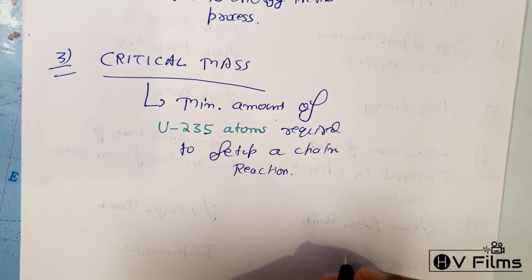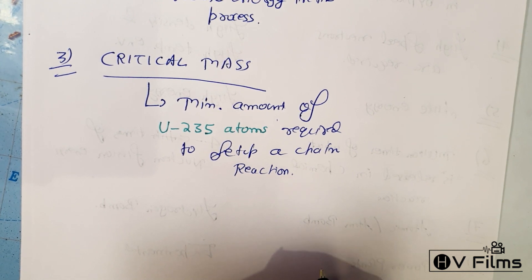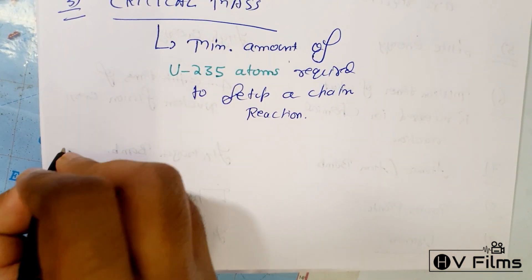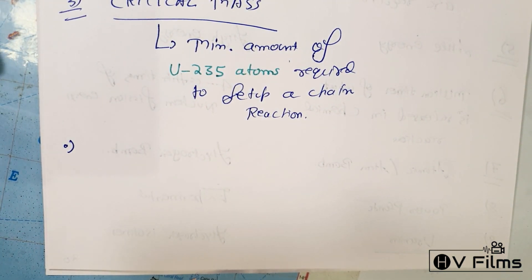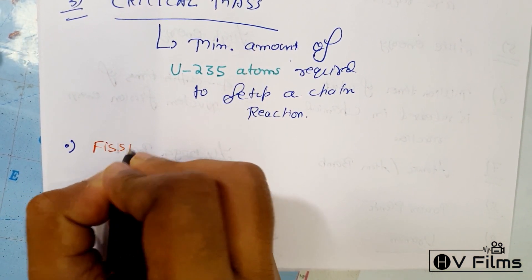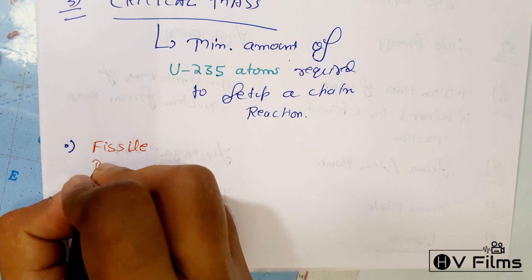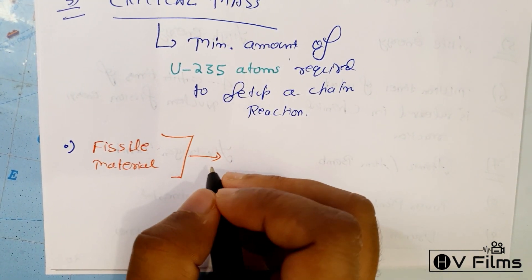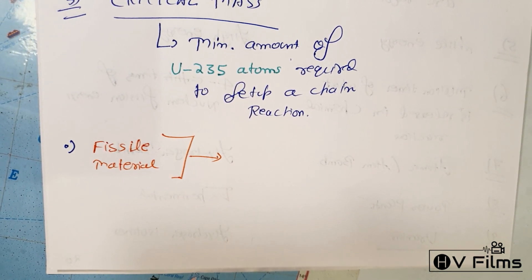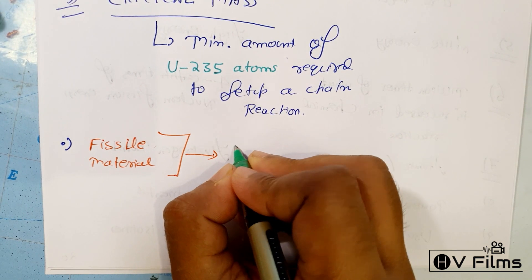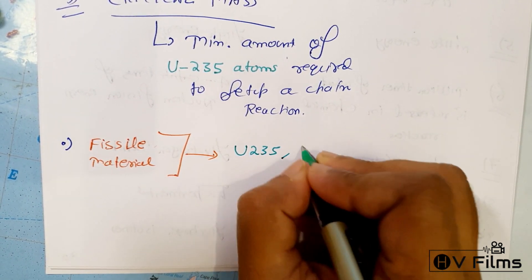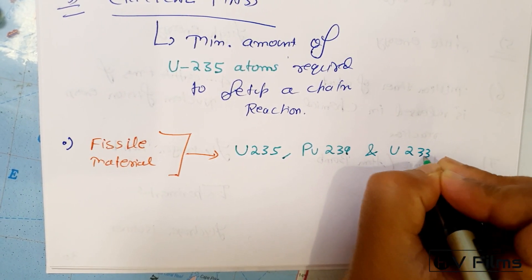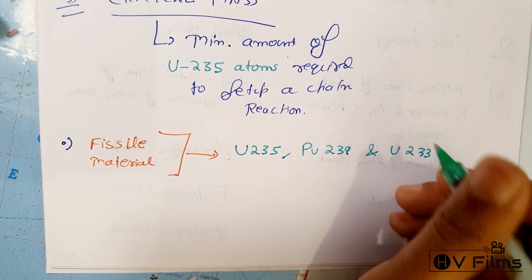Apart from that, here are examples of different fuels used in nuclear reactors. The first category is fissile materials. Examples of fissile materials are uranium-235, plutonium-239, and uranium-233. These are fissile materials and they can set up a chain reaction.